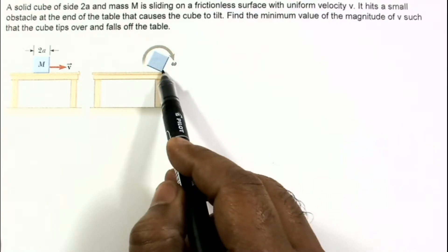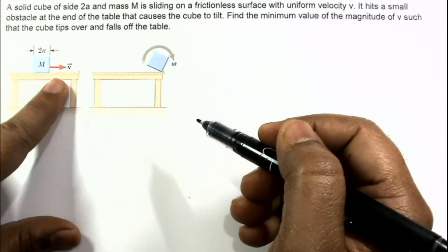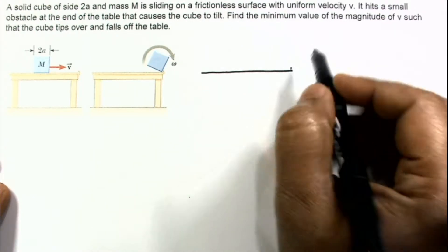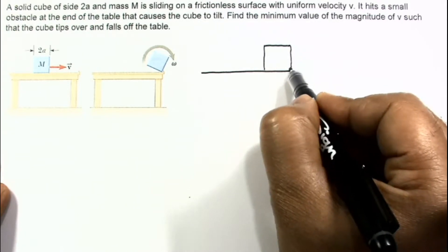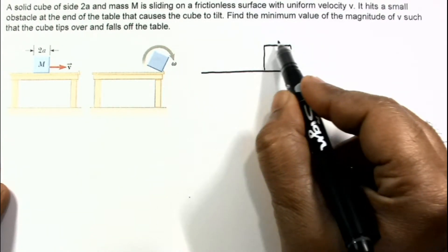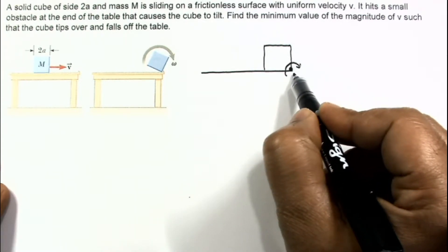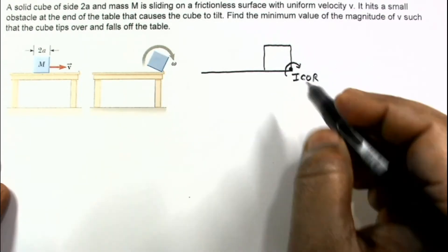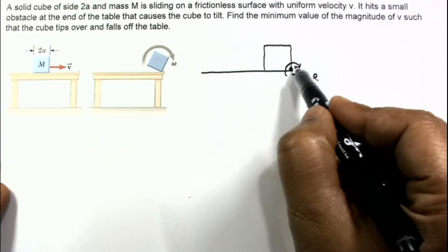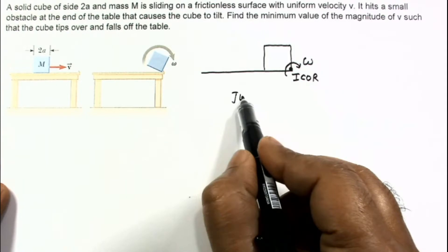From the diagram, the cube starts rotating about the obstacle point. Just before the collision and just after the collision, the obstacle acts essentially like a point. The cube will start rotating about this point, which we take as the instantaneous center of rotation, with the axis passing through it as the instantaneous axis of rotation. So just after the collision, the cube rotates about this point with angular velocity omega.